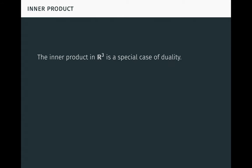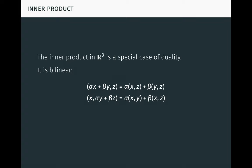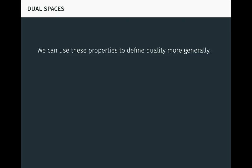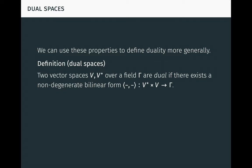But the inner product in R3 is just a special case of duality. Recall that it is bilinear, which means it is linear in each argument separately, as seen here. It is also non-degenerate, which means that if x times y is equal to zero for all y, then x is equal to zero. And similarly, if y times x is equal to zero for all x, then y is equal to zero. We can use these two properties to define duality more generally. Two vector spaces V and V-star over a field gamma are said to be dual if there exists a non-degenerate bilinear form, here denoted by angle brackets, defined between them.